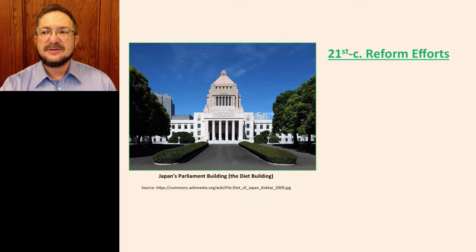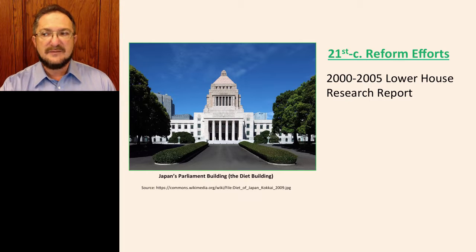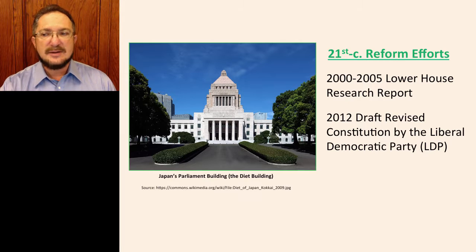It is in the 21st century that the most serious calls for reform have been issued, and they have not centered exclusively on Article 9. For example, in 2000 the Lower House of Parliament convened a research commission on the Constitution that issued, five years later, a report over 800 pages in length that included proposals for everything from greater environmental and privacy protections to restructuring government. And in 2012, the LDP published the draft of a revised constitution reflecting its priorities. The LDP claimed its draft included "numerous proposals for constitutional amendments that will unshackle the country from the system established during the occupation and make Japan a truly sovereign state."